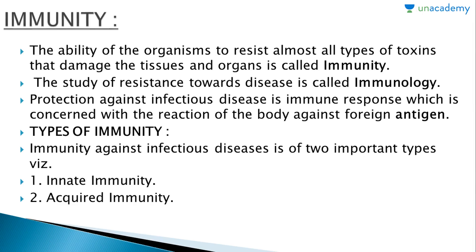Beginning with the lesson: the ability of an organism to resist almost all types of toxins that damage the tissues and organs is called immunity. Basically, immunity is the resistance to all types of antigens, toxins, pathogens, etc.